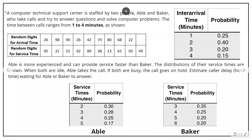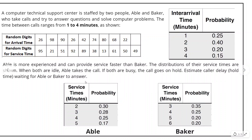The problem statement says that a computer technical support center is staffed by two people, Abel and Baker — something like a call center. The time between calls ranges from one to four minutes, so the inter-arrival time is between one and four minutes and the probability is given in the question. Abel is more experienced and can provide service faster than Baker. When both are idle, Abel takes the call. If both are busy, the call goes on hold. We need to estimate caller delivery hold waiting time for Abel or Baker to answer.